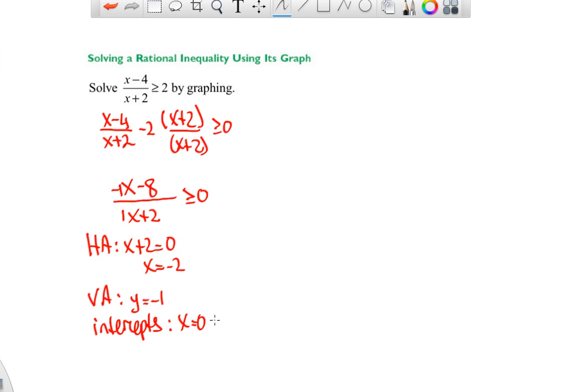Intercepts. When x is 0, you end up with negative 8 over 2, which is negative 4. And y is 0 when negative x minus 8 is 0. Let's move the x, so I get x as negative 8. That gives you a dot at negative 8, 0, and this one gives me a dot at 0, negative 4.